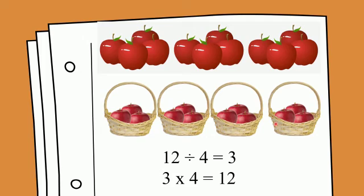Let's see how many apples will be in each basket: one, two, three. You can see that each basket has three apples. So the division fact would be: 12 divided by 4 is equal to 3. And in the multiplication process, 3 multiplied by 4 is equal to 12, as three apples in each basket and four baskets gives 12 apples altogether.